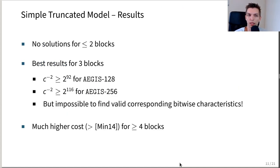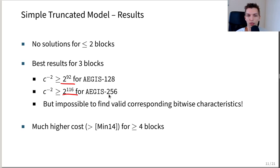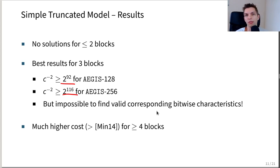As expected, we did not find any solutions for less than two keystream blocks. The best results were found for two state update functions or three keystream blocks. We were able to prove a bound of 2^{92} for Aegis-128 and 2^{116} for Aegis-256. Unfortunately, it is impossible to find valid corresponding bitwise characteristics — we will get to the reason in a moment. For more keystream blocks, the cost turns out to be much higher than the previous results of Brice Minot.